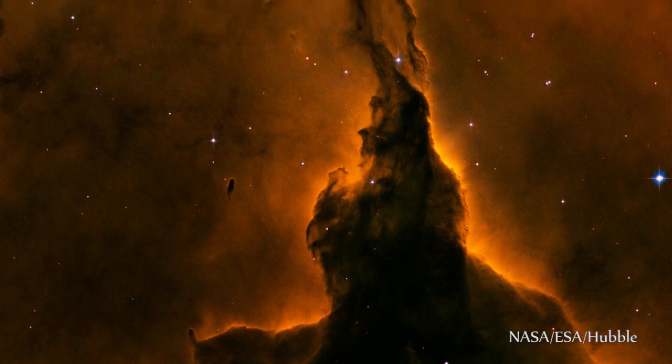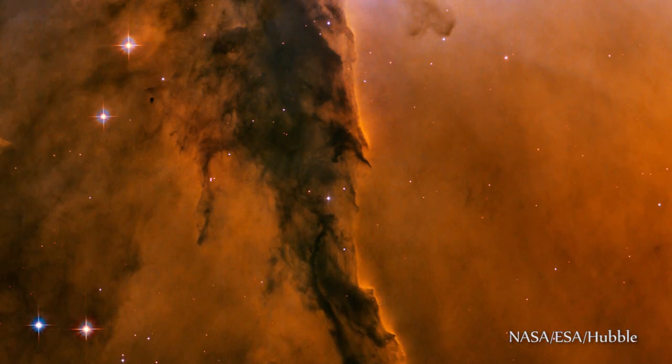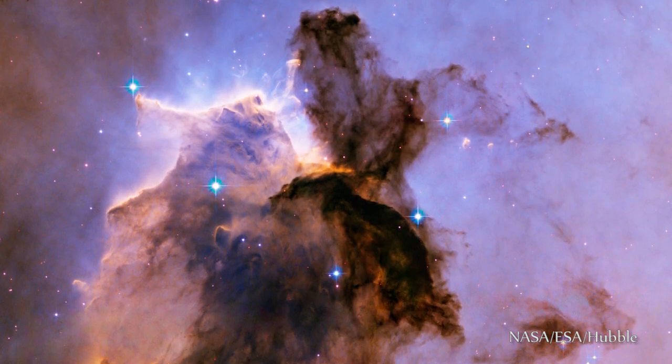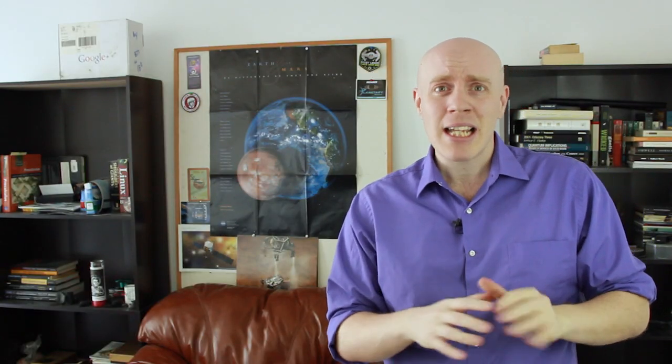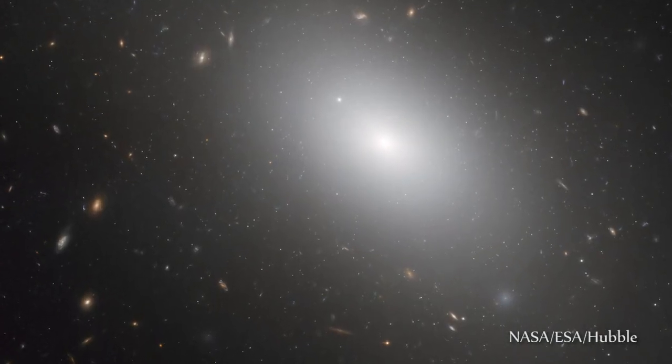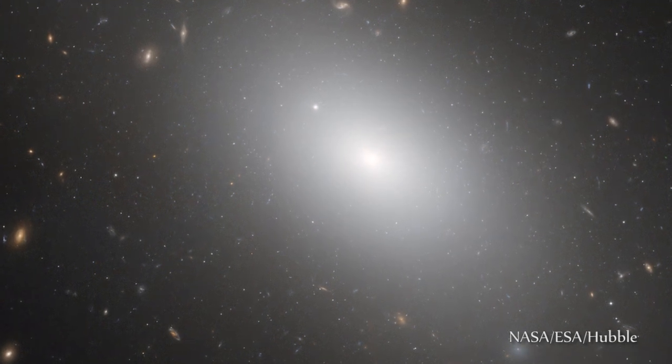In order for stars to form, large pockets of very cold gas need time to clump together until the spark of fusion happens. However, when looking at elliptical galaxies, scientists see very little star formation.